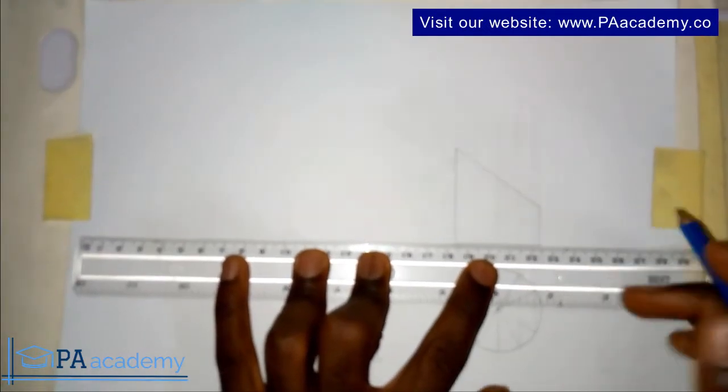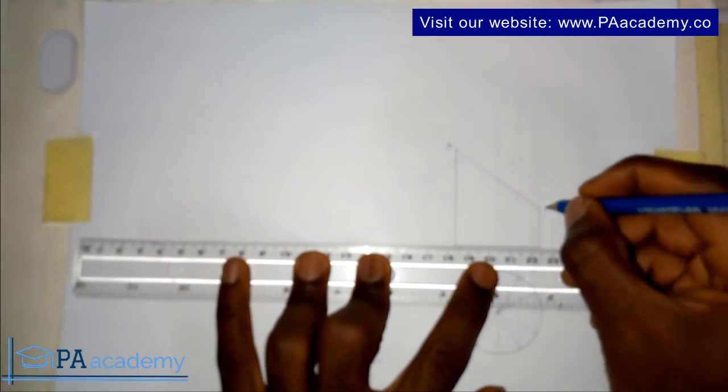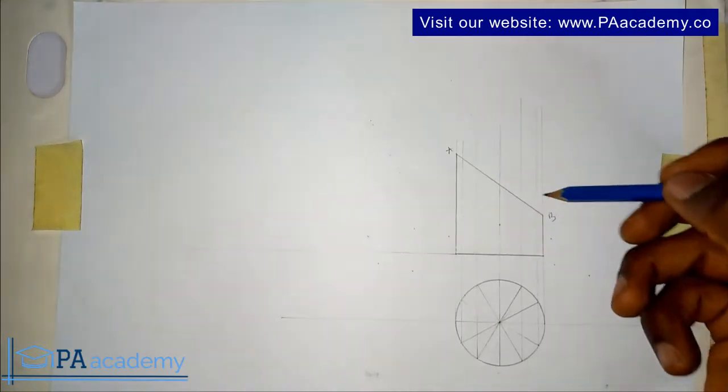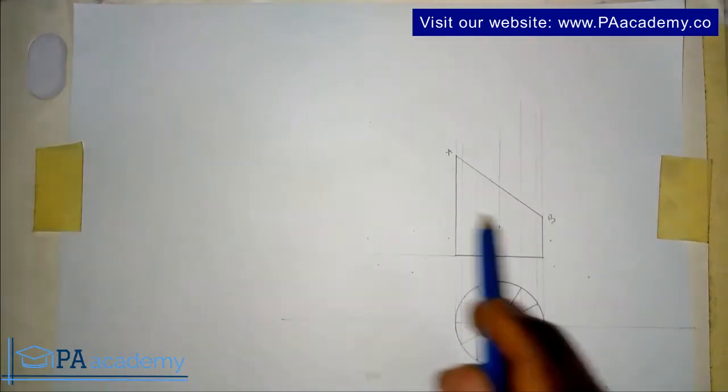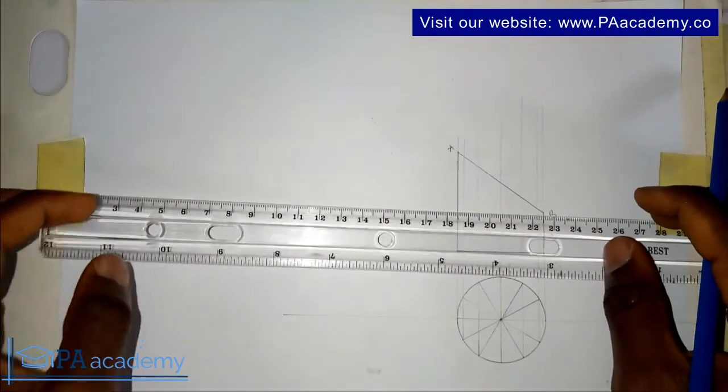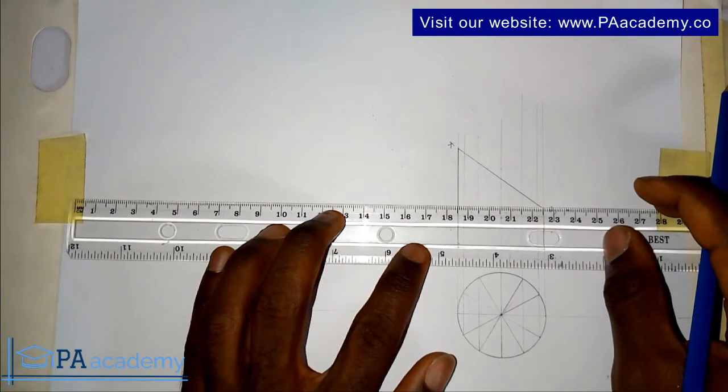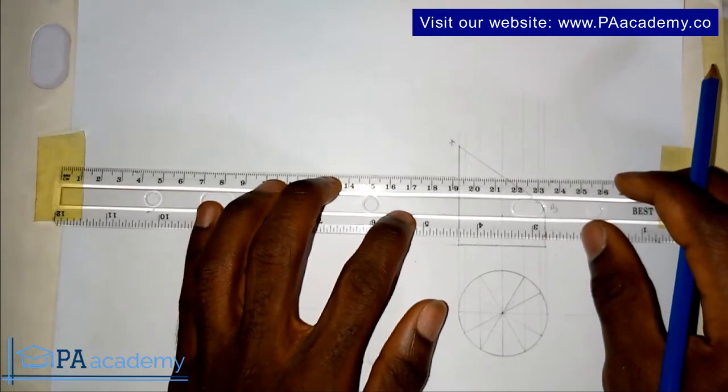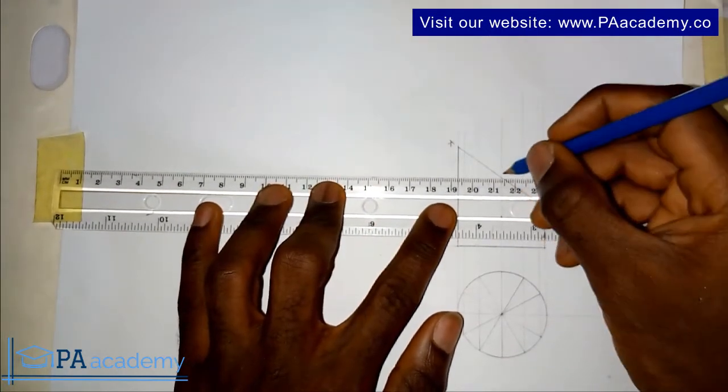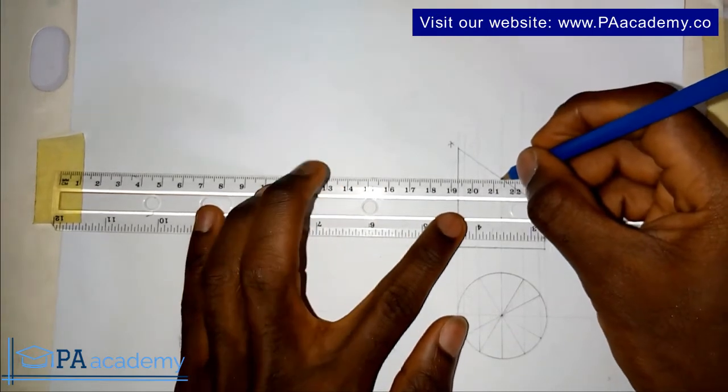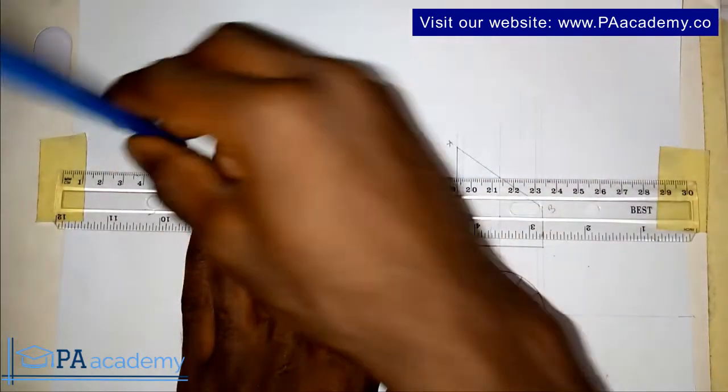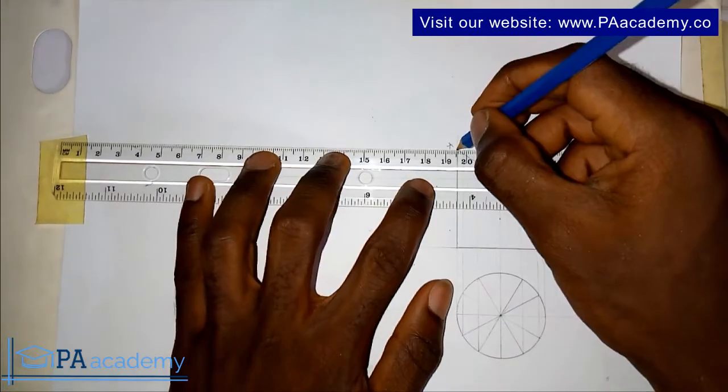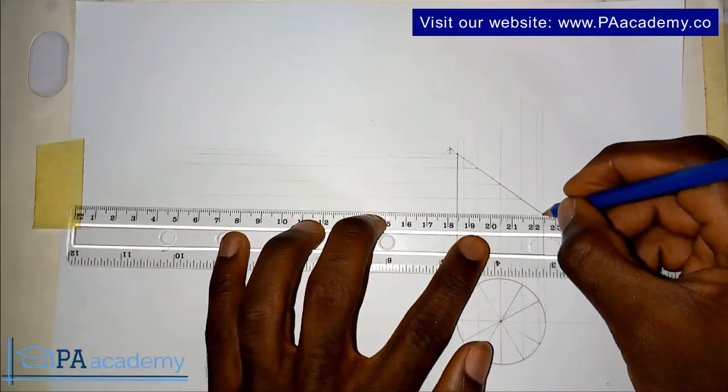Now I'll be projecting some horizontal lines. Let's call this line AB. The lines that I've just projected from this circle, where it's touching this line AB, from that point I'll be drawing it horizontally towards this side.